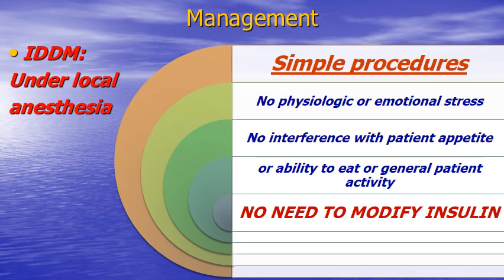For insulin-dependent type 1 diabetes, there are four scenarios: two under local anesthesia and two under general anesthesia. First local anesthesia scenario — simple procedures such as uncomplicated dental extractions, endodontic or restorative treatment: there is no physiological or emotional stress, no interference with patient appetite before or after surgery, and the patient can eat and perform normal activity. No need to modify insulin dose; the patient takes their regular morning meal and regular insulin dose.